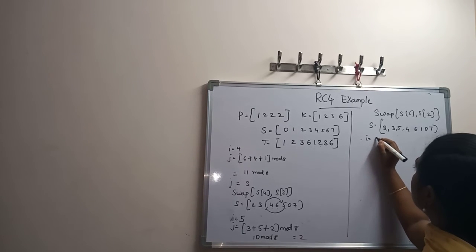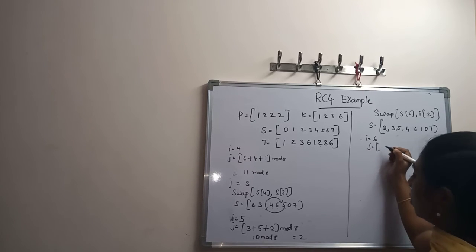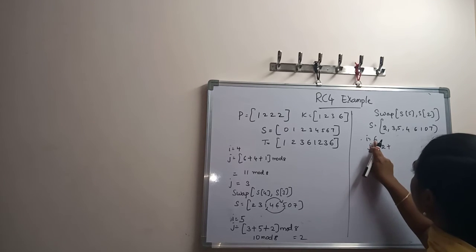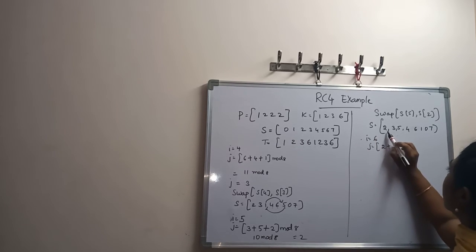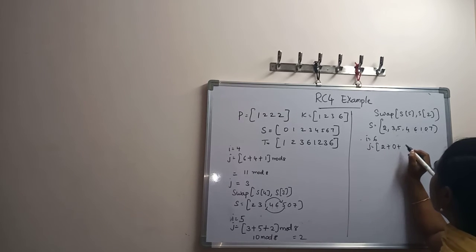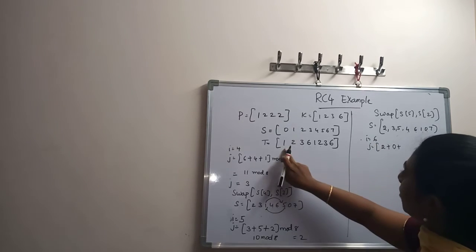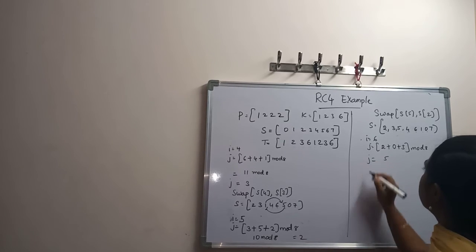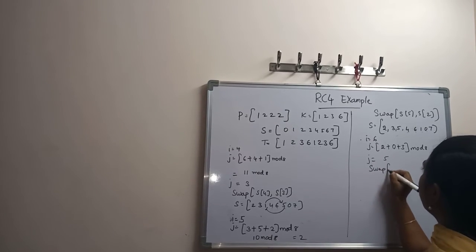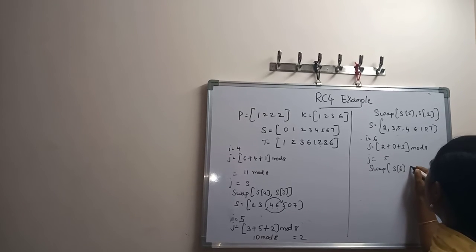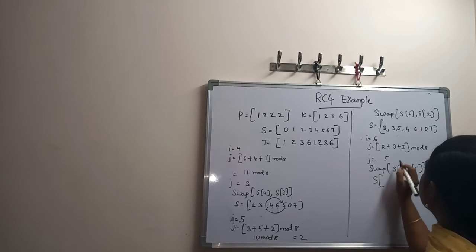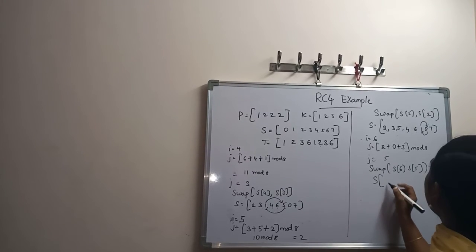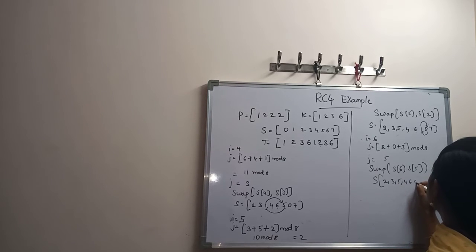For I equal to 6: previous J is 2, plus S[6] which is 0, plus S[J] at position 6, value is 3. So 5 mod 8, J equals 5. Swapping S[6] and S[5]: the vector becomes 2, 3, 5, 4, 6, 0, 1, 7.